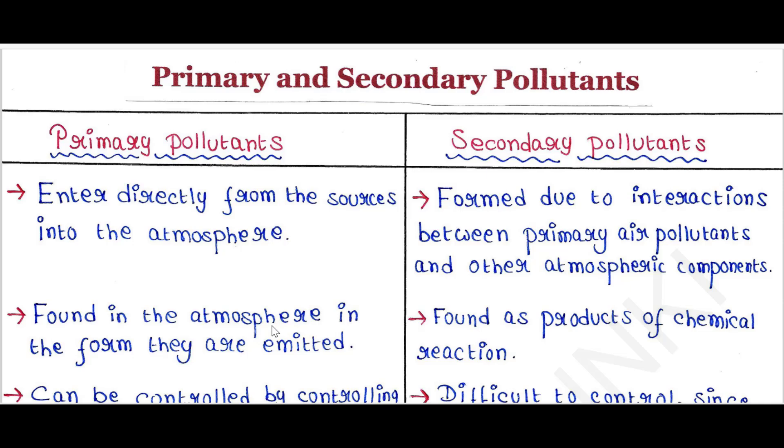Primary pollutants are mainly found in the atmosphere in the form they are emitted. Secondary pollutants are found as products of chemical reaction.